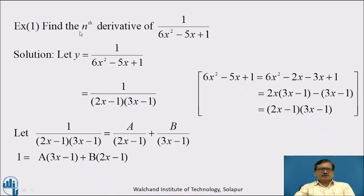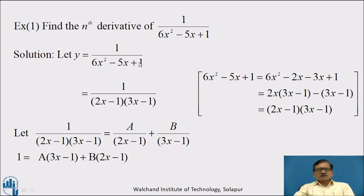The first example is: find the nth derivative of 1 upon 6x² minus 5x plus 1. Let y equal to 1 upon 6x² minus 5x plus 1. To apply the general formula of the nth derivative, we first have to factorize the denominator, which is a quadratic equation, as a product of two linear factors.